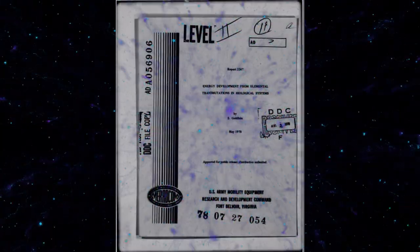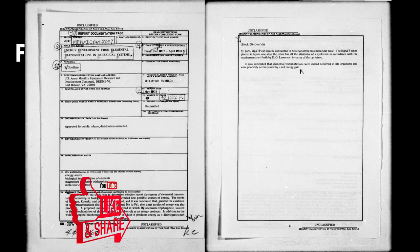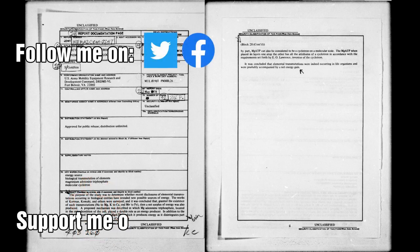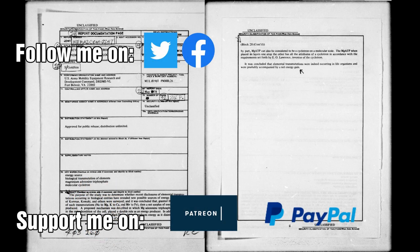So the first thing to note is that this report was carried out by the US Army Mobility Equipment Research and Development Command Unit. The purpose of the study was to determine whether recent disclosures of elemental transmutations occurring in biological entities have revealed new possible sources of energy. The report documents some of the findings from Kevran and proposes a mechanism whereby these transmutations might be occurring.